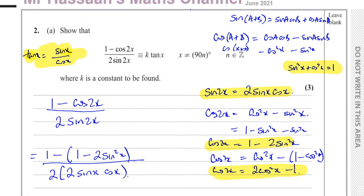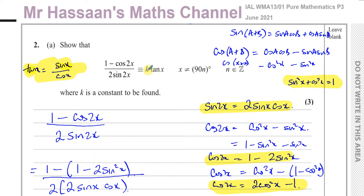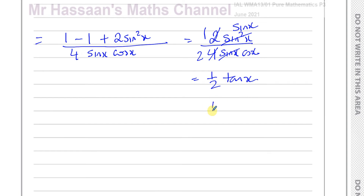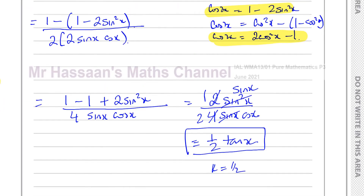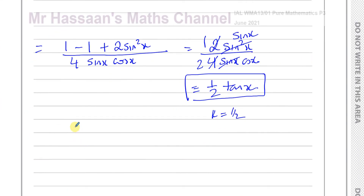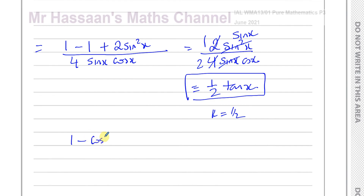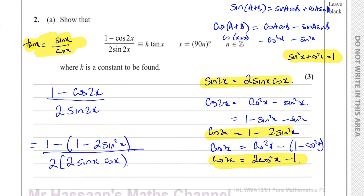We're told k is a constant to be found — and k equals one half. So we've shown that (1 − cosine 2x) over (2 sine 2x) equals one half tan x. That's the answer to part A.